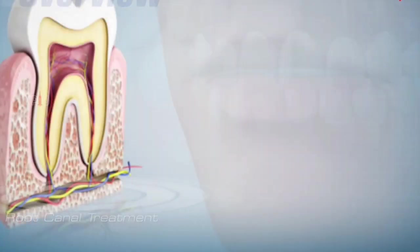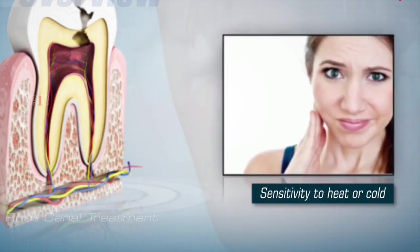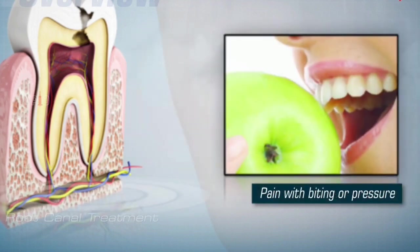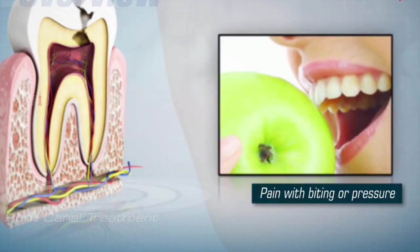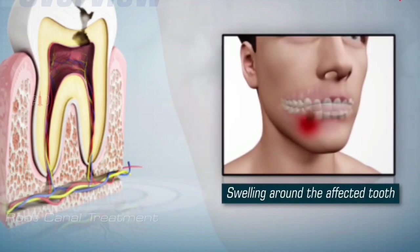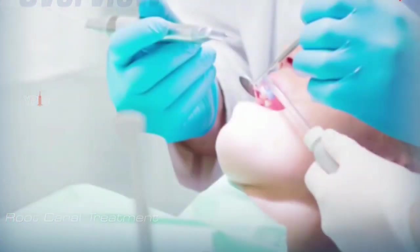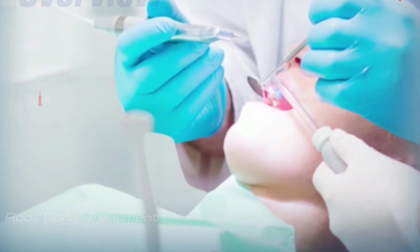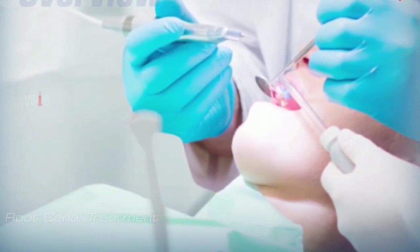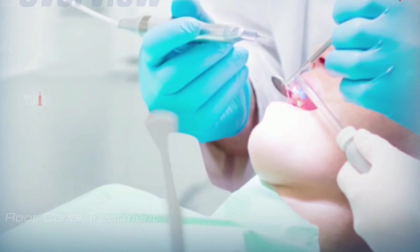When tooth decay has progressed far enough into the pulp, you may have severe toothache, sensitivity to heat or cold, pain with biting or pressure, tooth discoloration, and swelling around the affected tooth. These symptoms may indicate the need for a root canal treatment, where the pulp of a tooth is treated in an effort to maintain a healthy tooth.